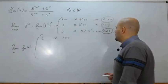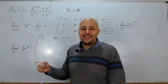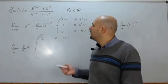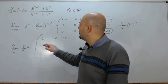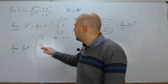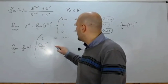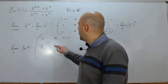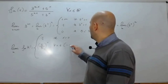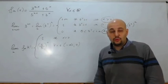Mentre invece se x è minore di 0, vuol dire che sia 3^(nx) che 5^(nx) tendono a 0, quindi abbiamo che la nostra funzione limite rimane 5^x / 3^x, ovvero (5/3)^x, per ogni x appartenente all'intervallo (-∞, 0), con 0 escluso.